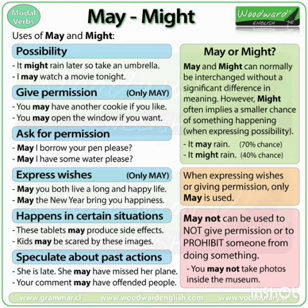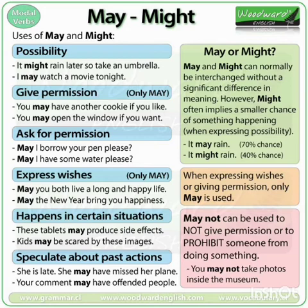Now the functions of 'may' and 'might.' There is a minor difference between them. 'It may rain' — the chance of raining is about 70%. 'It might rain' — the chance is only about 40%. 'Might' implies a smaller chance of something happening compared to 'may.' For possibility: 'It might rain later, so take an umbrella'; 'I may watch a movie tonight.'